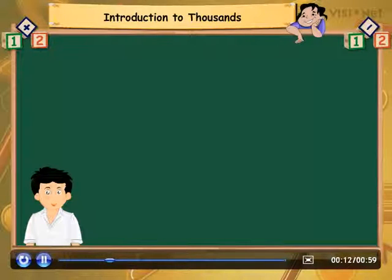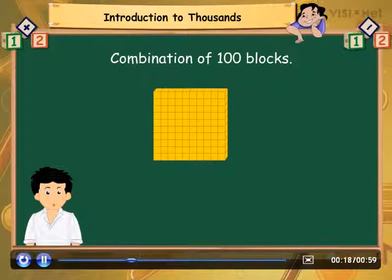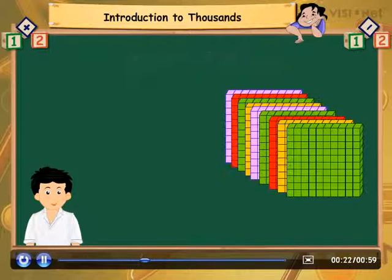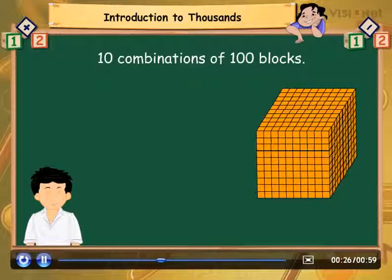Let us try to represent thousand in the form of a figure. We know that one hundred can be represented by this figure. As one thousand is a combination of ten hundreds, the figure that represents thousand looks like this.